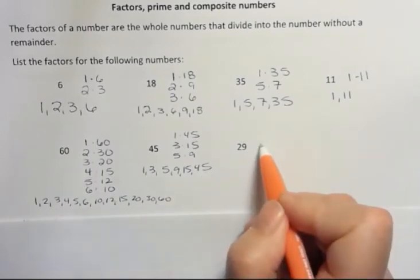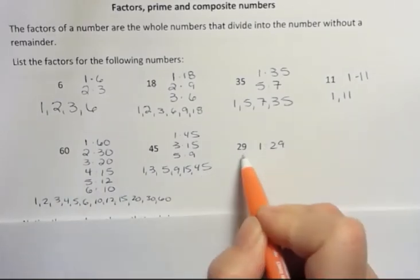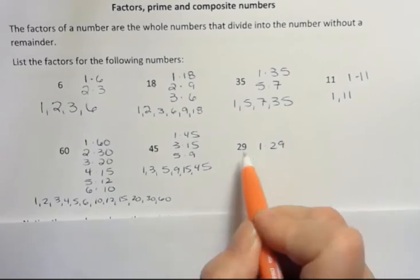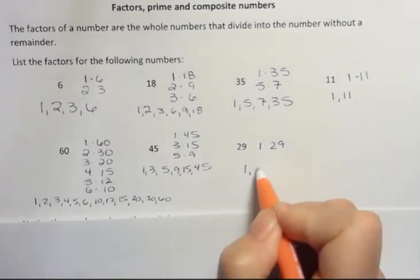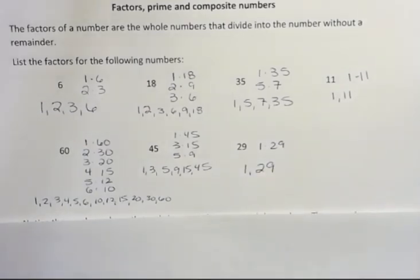29. 1 times 29. 2 doesn't go. 3 doesn't go. 4 doesn't go. 5 doesn't go. 6. Well, 6 times 6 is 36. That's as high as I need to go. So I know that only two factors are 1 and 29.